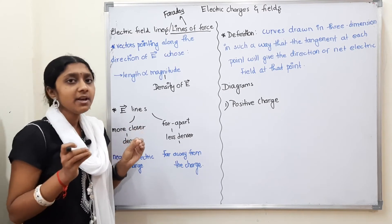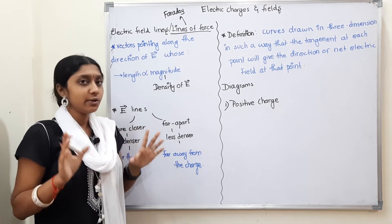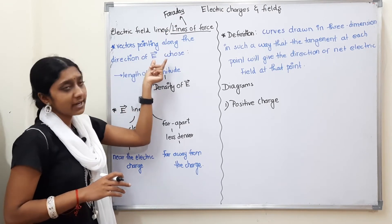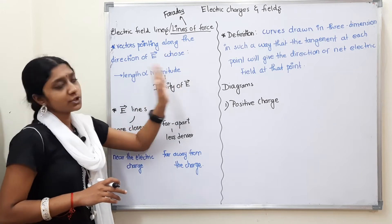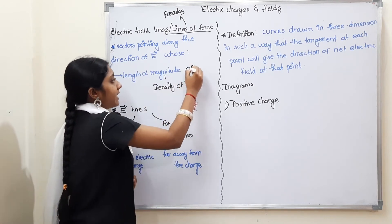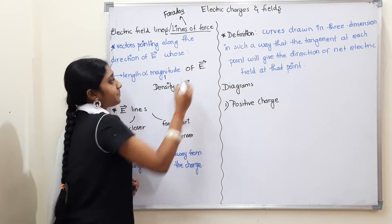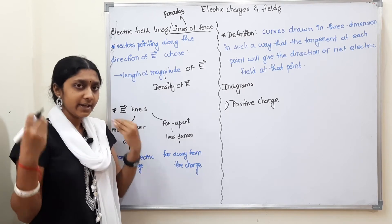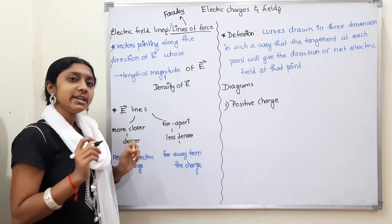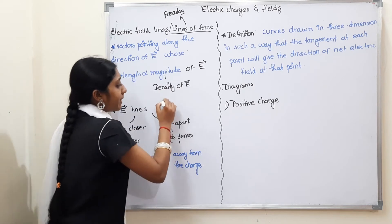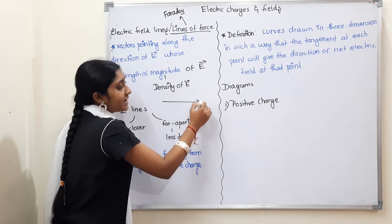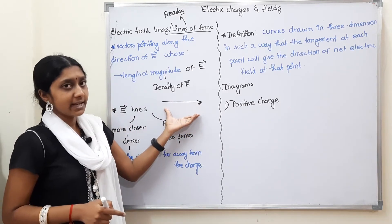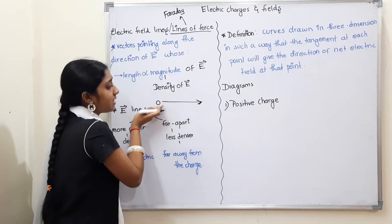So what is an Electric Field Line? Electric Field Lines are vectors pointing along the direction of the electric field, whose length is directly proportional to the magnitude of the electric field. Electric Field is a Vector Quantity — it has both magnitude and direction. The arrow mark on the vector indicates direction, and the length of the vector indicates the magnitude of the electric field.